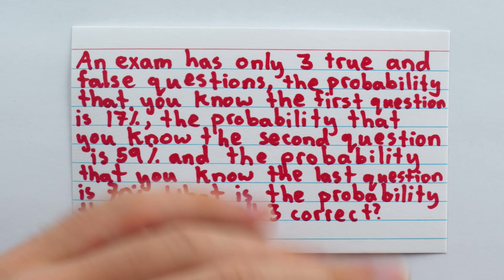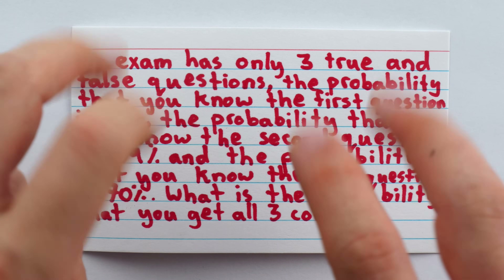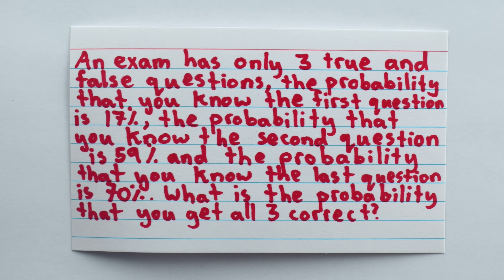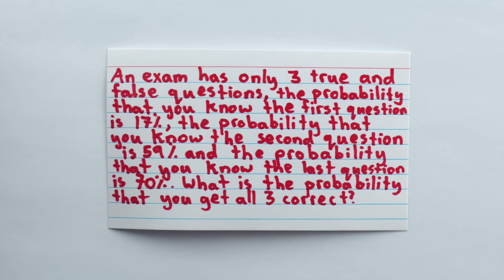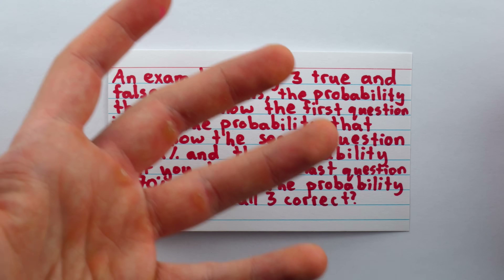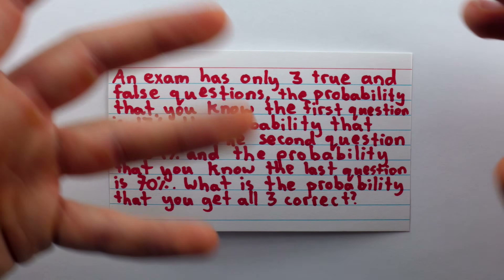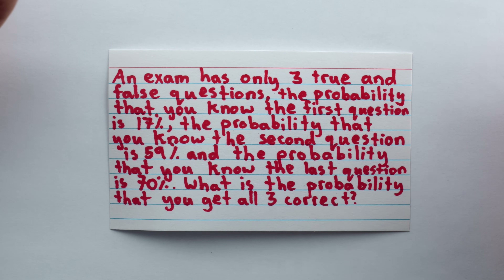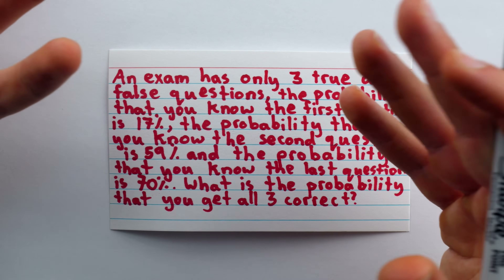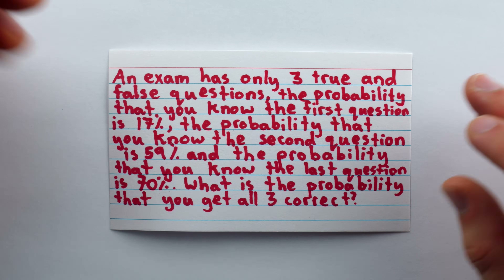The other issue that's not wording-based is independence. If a student knows the answer to one of the true or false questions, there's a good chance they're more likely to know the answers to the others — because if they know one, that suggests some amount of studying.